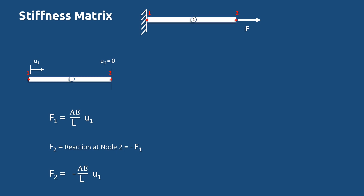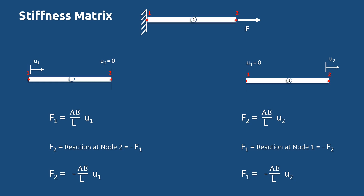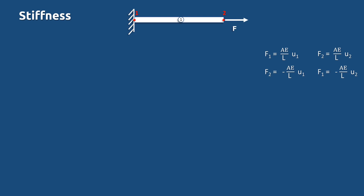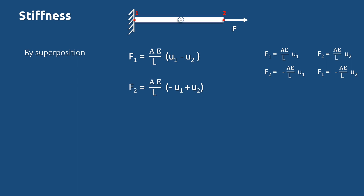So F2 equals minus F1, which is minus (AE/L) times U1. Now assume a displacement U2 at node 2 and zero displacement U1 at node 1. Let F2 be the force required to produce U2, then F2 equals (AE/L) times U2. Let F1 be the reaction force, then F1 equals minus F2, which is minus (AE/L) times U2. Now we have two expressions for both F1 and F2. Combining: F1 equals (AE/L) times (U1 minus U2), and F2 equals (AE/L) times (minus U1 plus U2).